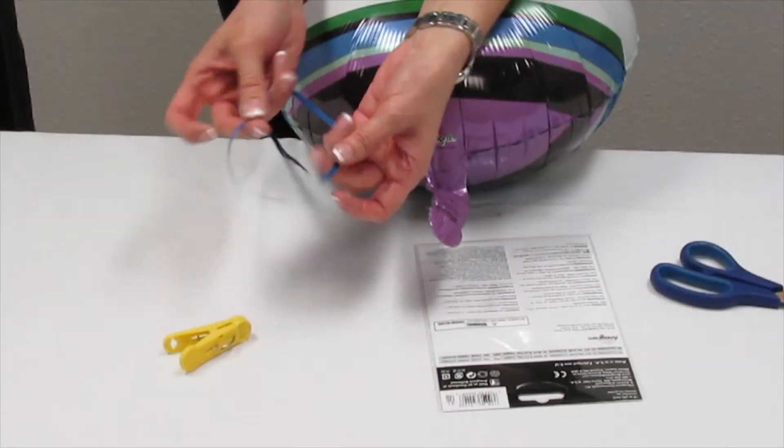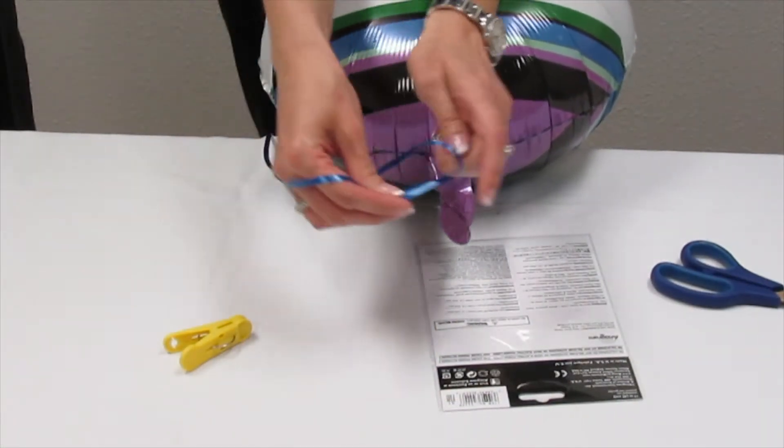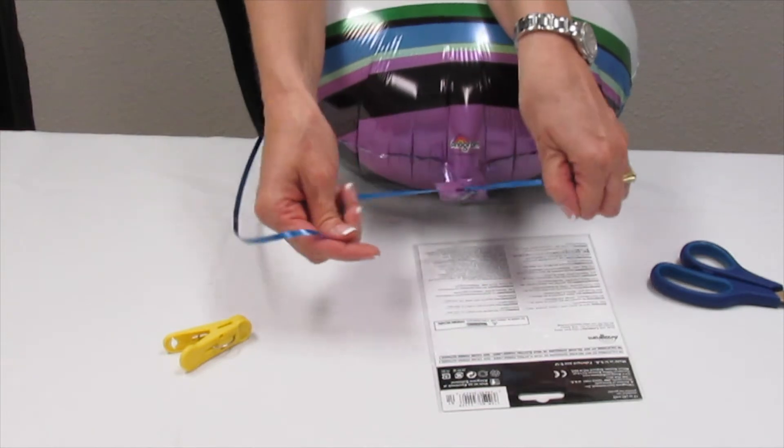Tie the curling ribbon onto the balloon tail. Make sure to keep the knot below the valve opening.